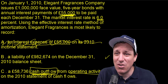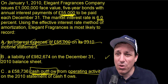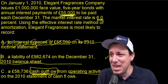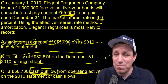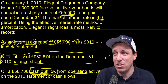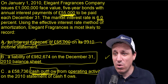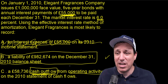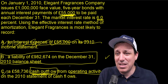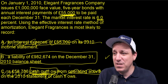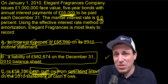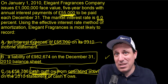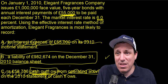Without even touching your calculator, you can know the correct answer is B. The cash outflow stated in the problem is $55,000, so option C is wrong. The answer is B.